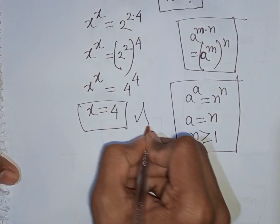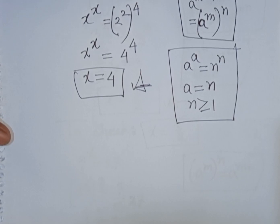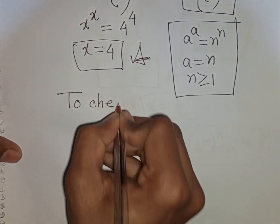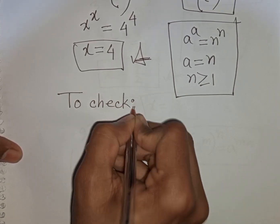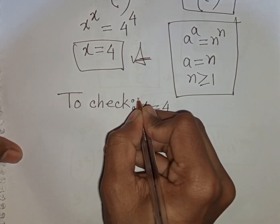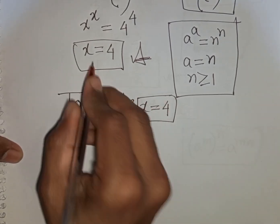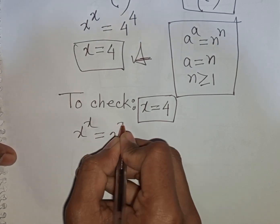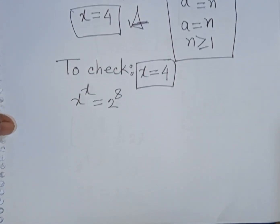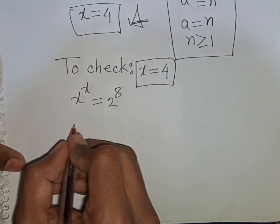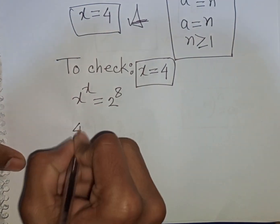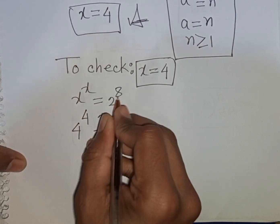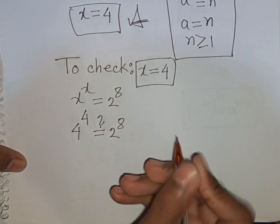So 4 is the value of x — this is our final answer. Now to check: for x is equal to 4, our equation x power x is equal to 2 power 8. Now we can write x power x, that means it will be 4 power 4 is equal to 2 power 8.